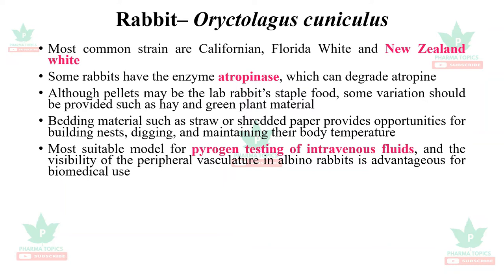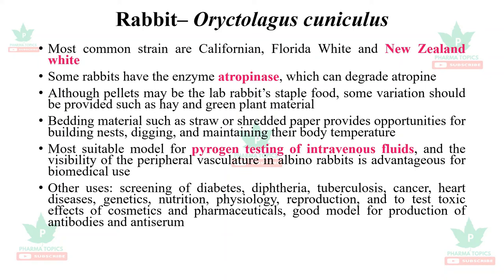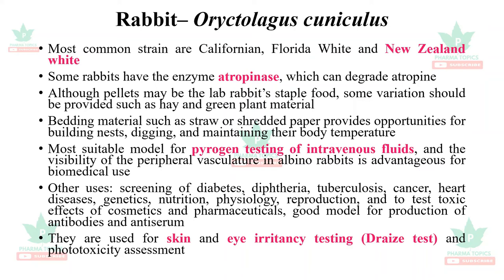Rabbits are used for screening diabetes, diphtheria, tuberculosis, cancer, heart diseases, reproductive studies, and to test toxic effects of cosmetics and phytopharmaceuticals. They are a very good model for production of antibodies and antiserum. They are also used for skin and eye irritancy testing — the Draize test — and phototoxicity assessment.